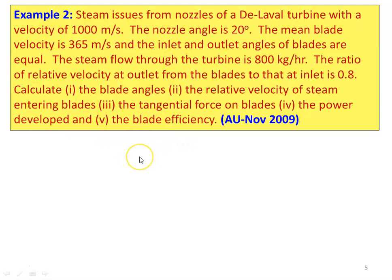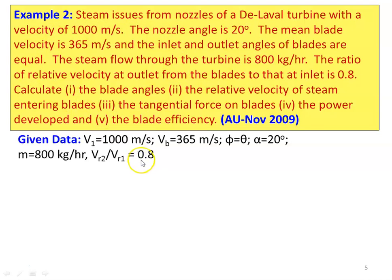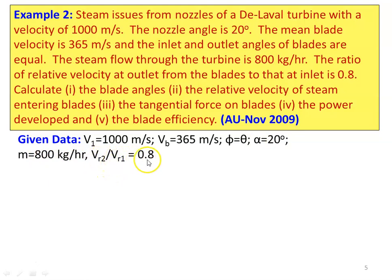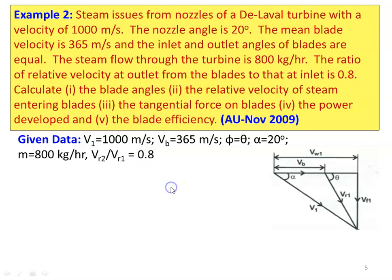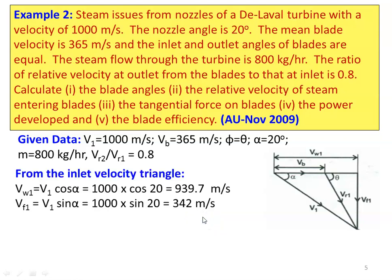Given data: V1 equals 1000 meters per second, blade speed 365 meters per second, blades are symmetrical (theta equals β), alpha equals 20 degrees, mass flow rate is 800 kg/h, and friction coefficient VR2/VR1 equals 0.8. Draw the inlet velocity triangle and calculate the parameters.